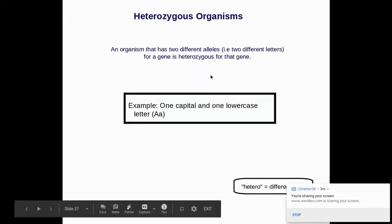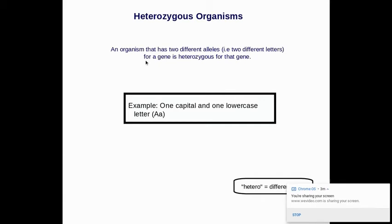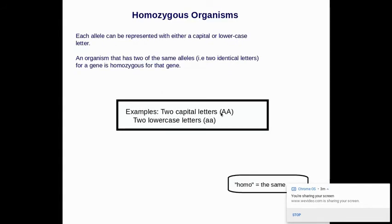Heterozygous means different. So an organism that has two different alleles, two different letters, is heterozygous for that gene. That means one capital and one lowercase. So our choices are heterozygous, which would be one capital, one lowercase, or homozygous, which could be either two capital or two lowercase. So there's three choices altogether.